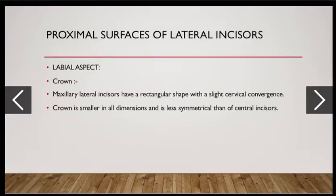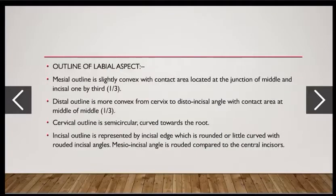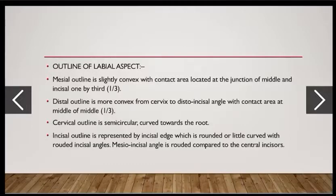Labial aspect — crown: the maxillary lateral incisors have a rectangular shape with slight cervical convergence. The crown is smaller in all dimensions and less symmetrical compared to the central incisors. The mesial outline is slightly convex with the contact area at the junction of the middle and incisal one-third. The distal outline is more convex from the cervix to the disto-incisal angle, with the contact area at the middle or middle one-third.